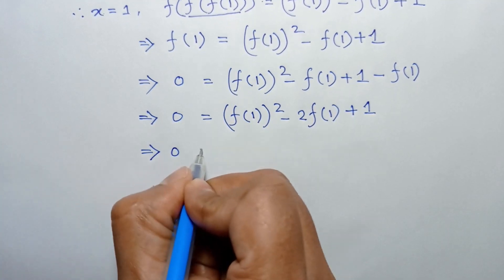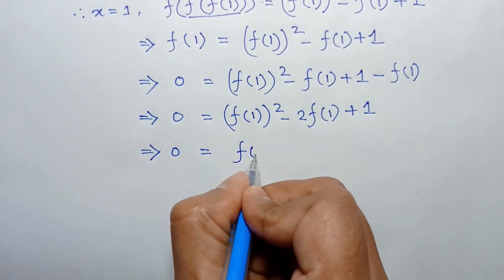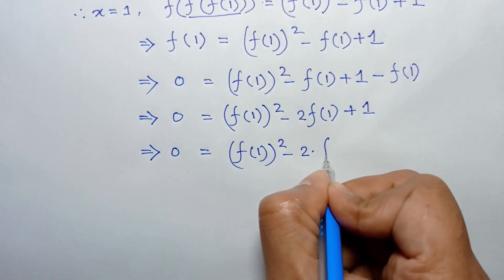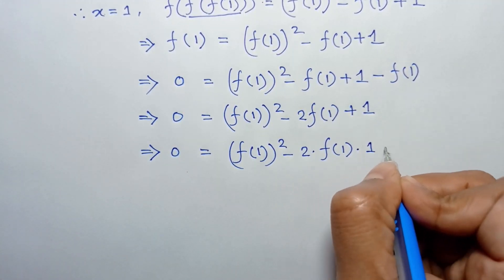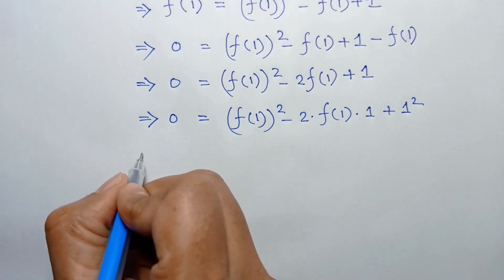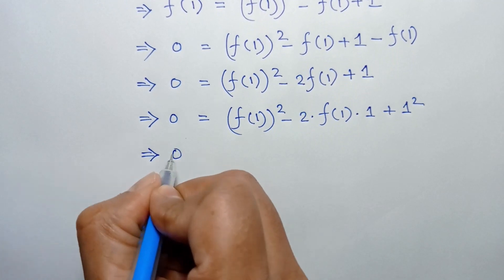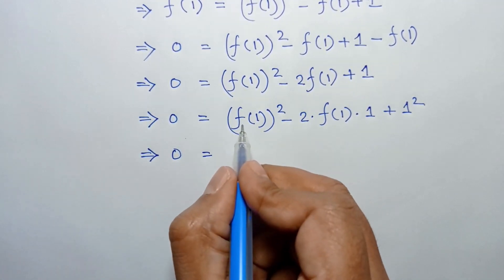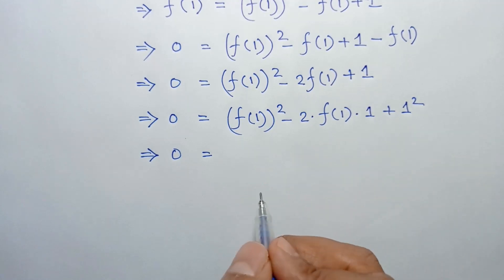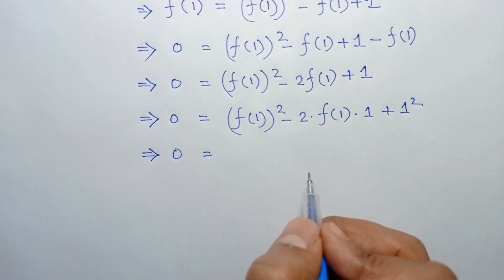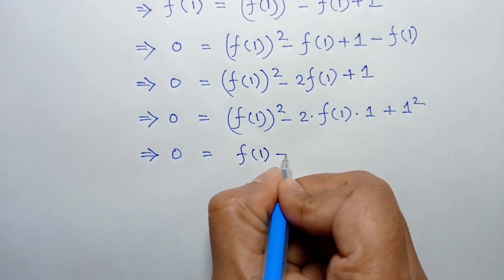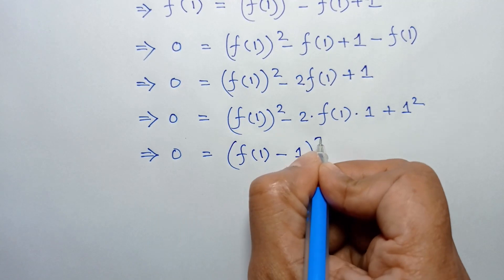So 0 equals f(1) squared minus two times f(1) times one plus one squared. Applying the formula a squared minus two ab plus b squared equals (a minus b) squared, we can write this as f(1) minus one, all squared.